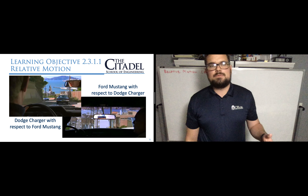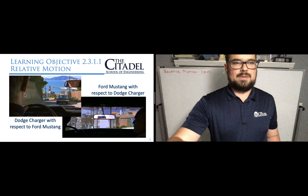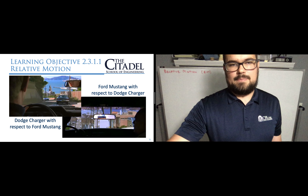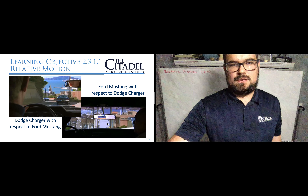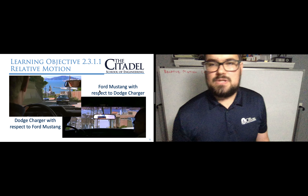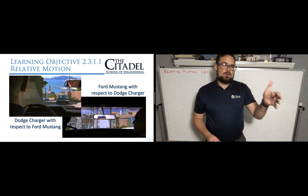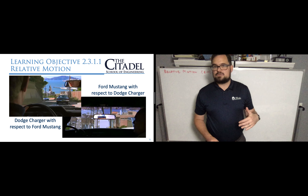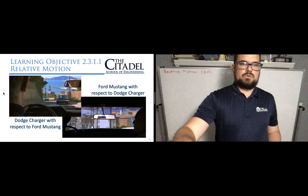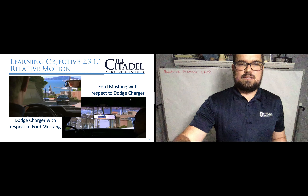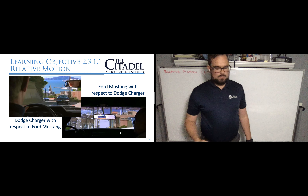Up here on the top left, we have Steve McQueen in his Ford Mustang looking at the Dodge Charger — this is the back of Steve's head and then there's the Dodge Charger. On the other hand, we have the bad guys looking in their rearview mirror at the Ford Mustang. The notation we're going to use is: we name the object we're looking at first, relative to where we're standing. So: Dodge Charger with respect to the Ford Mustang, or the Ford Mustang with respect to the Dodge Charger.